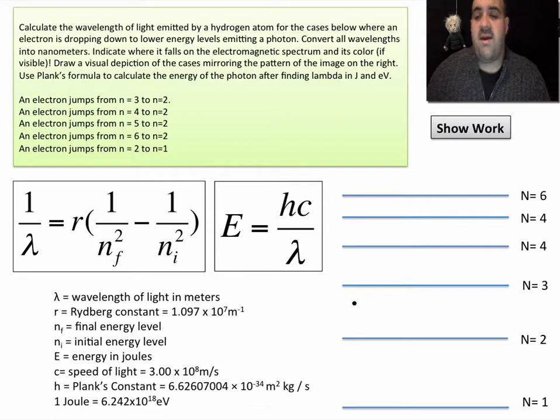Right over here we have a hydrogen atom. This is energy level one, energy level two, energy level three, four, five, six, and we know that electrons are going to jump up and down energy levels.